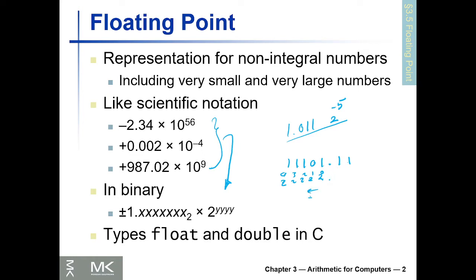Each time we move left we increase the exponent by 1; if we go right past the binary point we decrease the exponent by 1. So the first fractional bit is 2 to the power of minus 1, which is one-half; the next is 2 to the power of minus 2, which is one-quarter, and so on. This is called the binary point — analogous to the decimal point for decimal fractions.